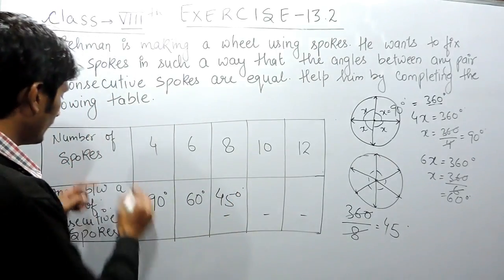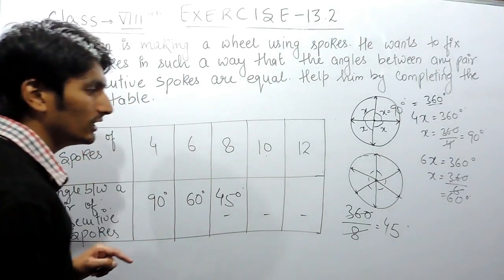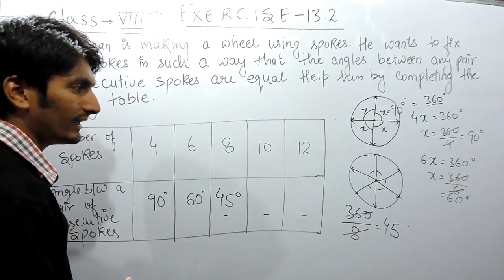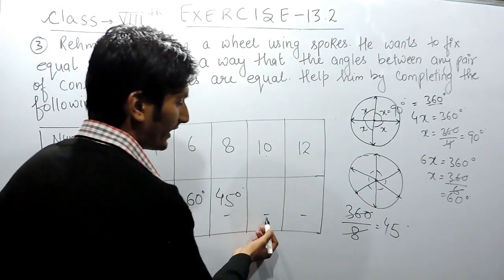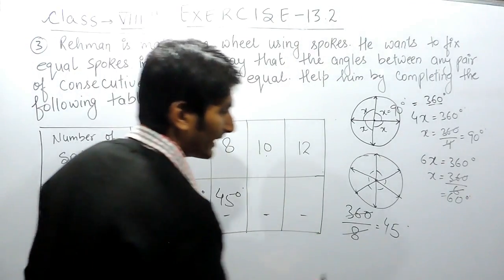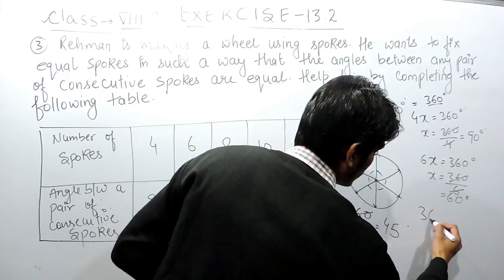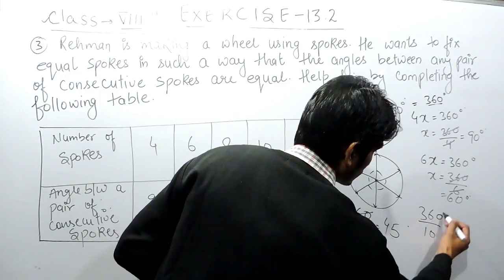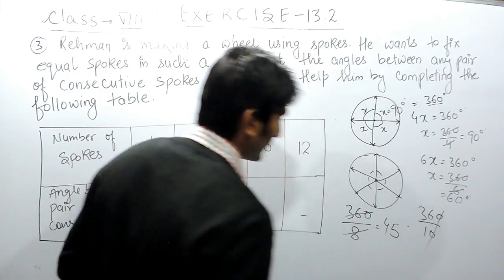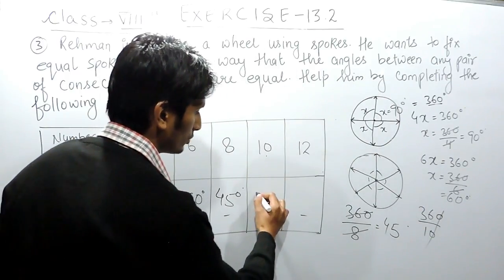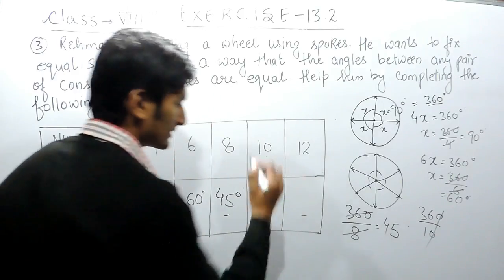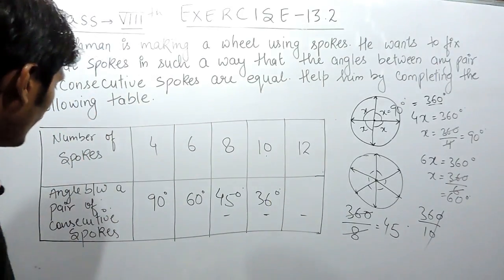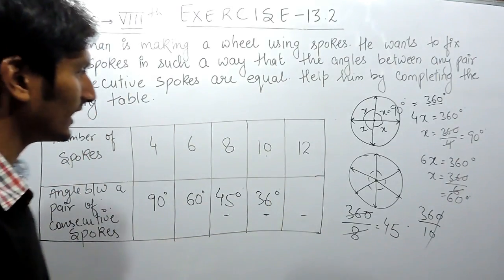Now the number of spokes is 10, so clearly the number of angles will be 10. To find one angle, you have to divide 360 by 10. The zeros cancel, so this gives 36 degrees.